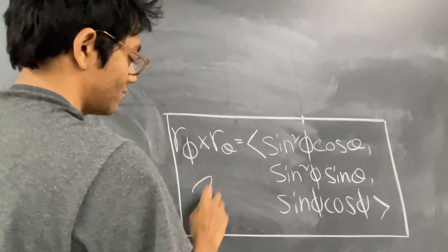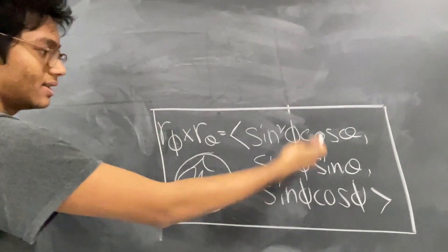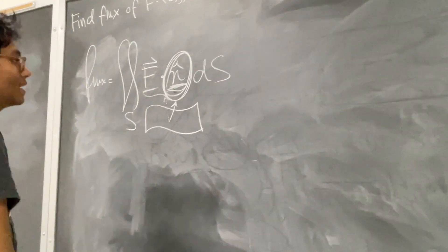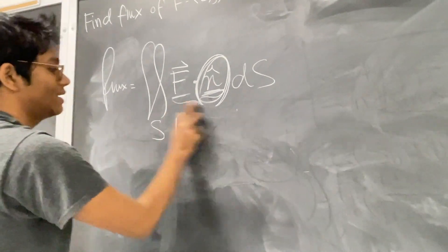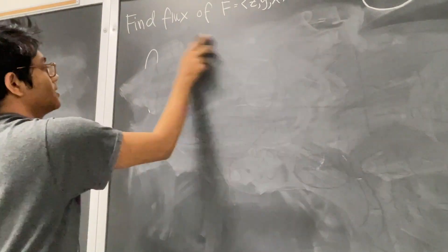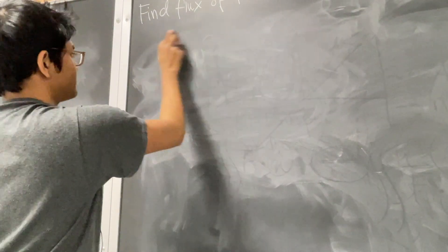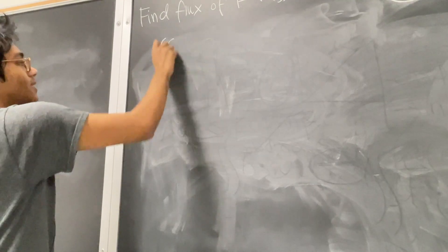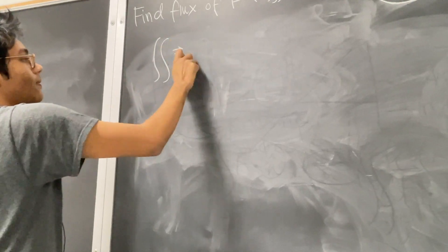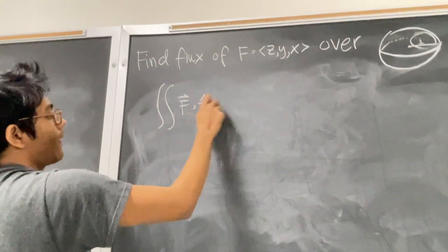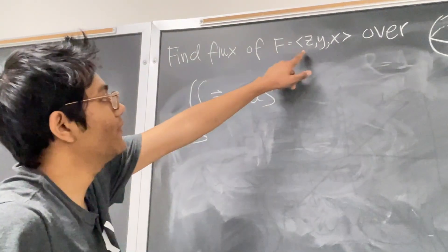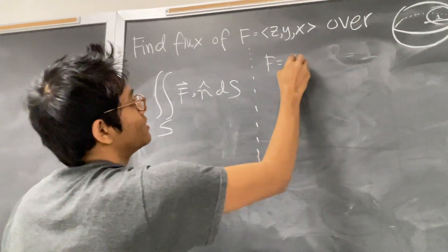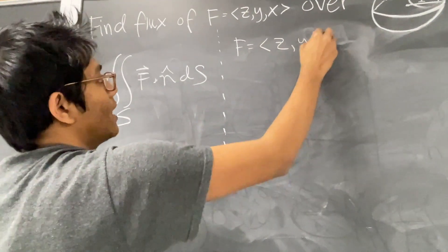This happens to be this entire vector. So we're going to plug it in and take it from there. Let me write this in a smaller way so I have some space. The flux is given by this double integral ds over s, and our F here is equal to (z, y, x).